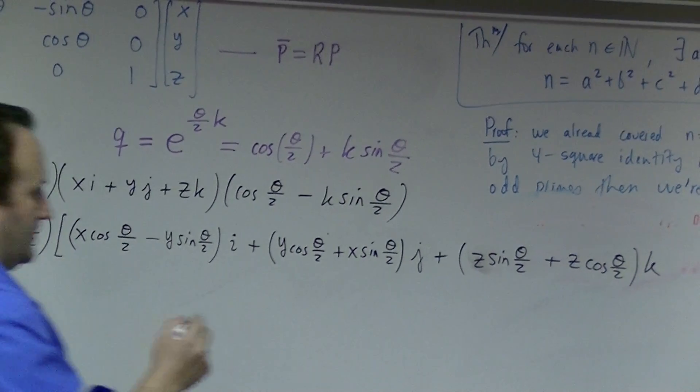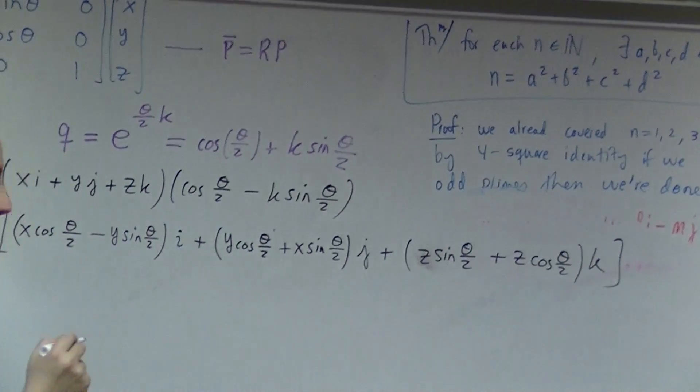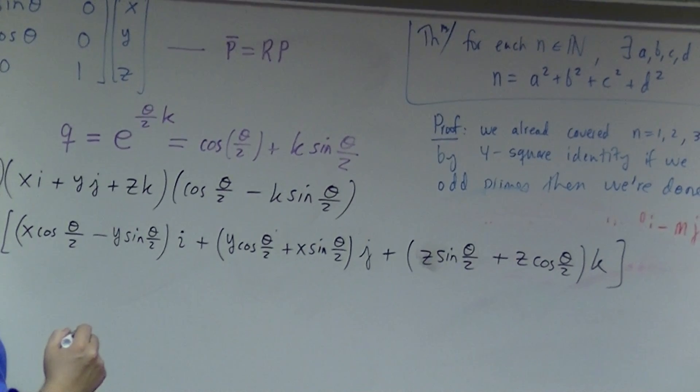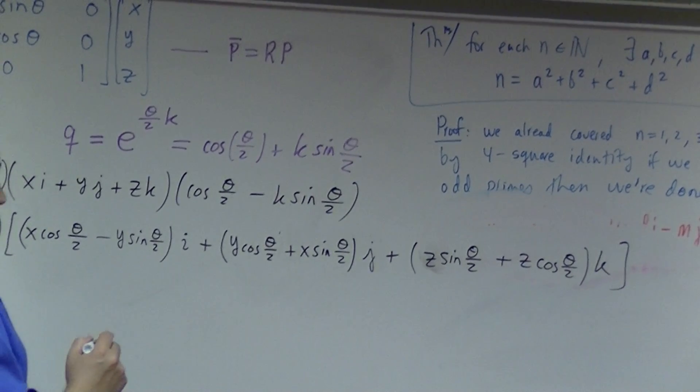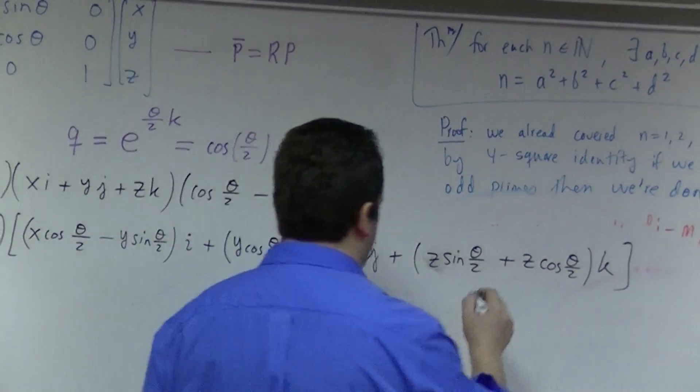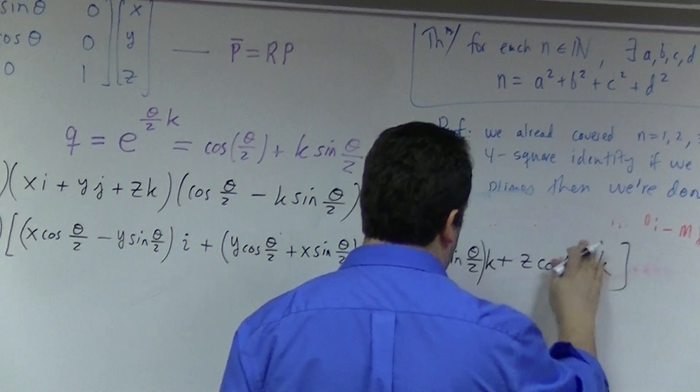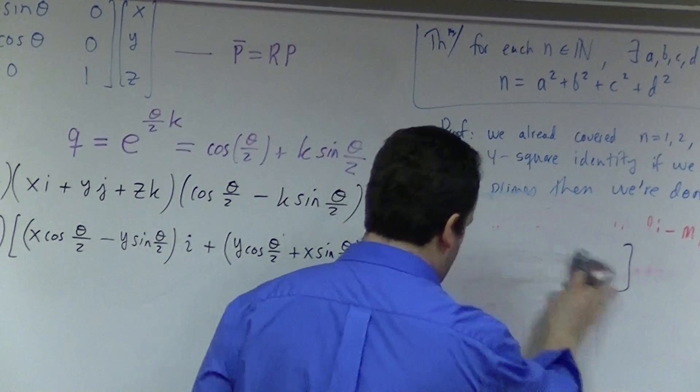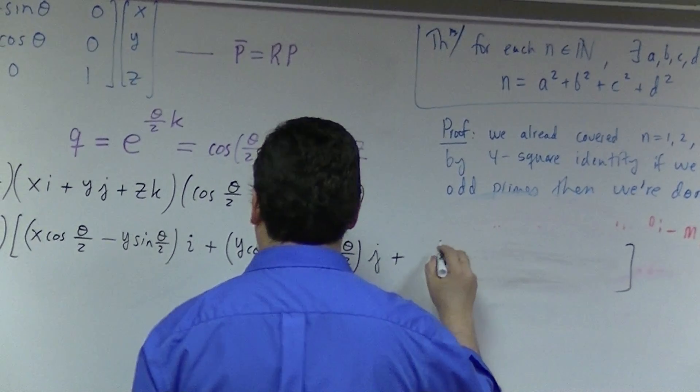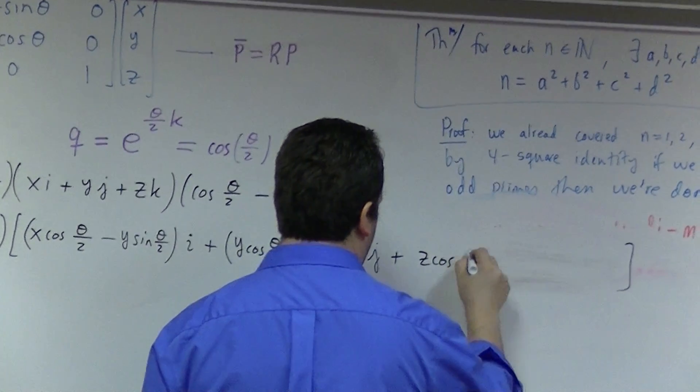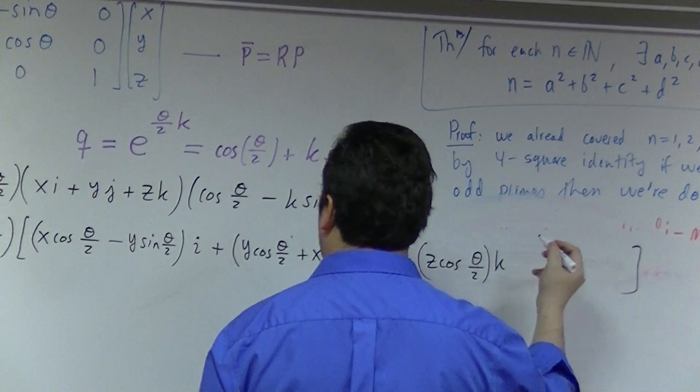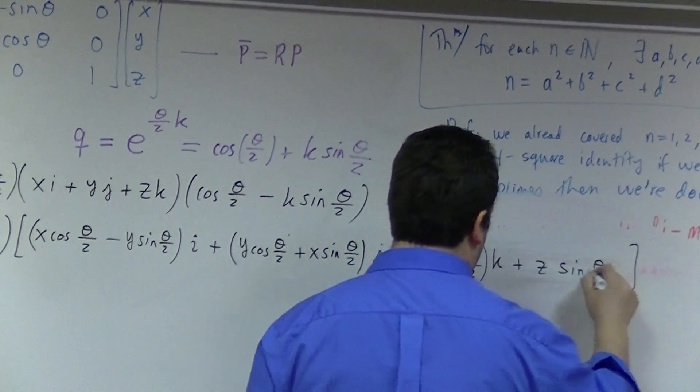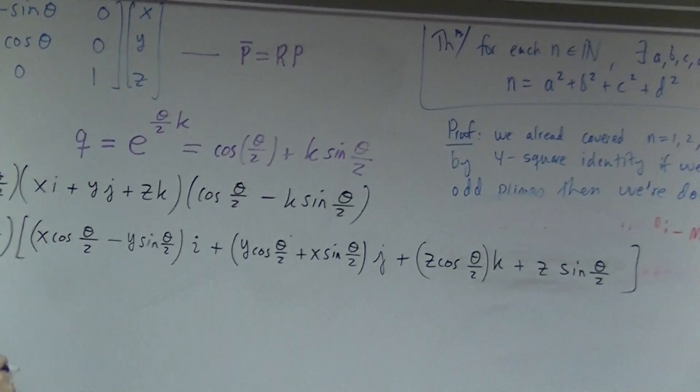I made a mistake there. There wouldn't be a k factor. k times k is just minus 1. Oh, right, right, right here. Bummer. So that should just be this one. And then that's just a plain z cosine theta over 2. I have no way around. So it's z cosine theta over 2 times k, what was it? Plus z sine theta over 2? That's right.